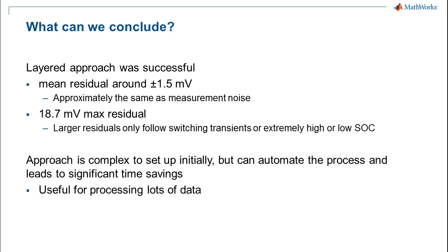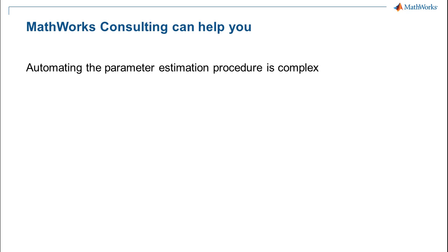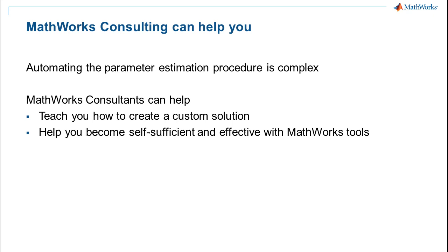While we found the approach to be rather complex to set up initially, we were successful in automating it, which led to significant time savings in processing a large number of datasets that characterize a battery cell. Automating the parameter estimation process is a complicated task. However, if you have lots of datasets to deal with, the benefits of automation are huge. MathWorks consultants can help. We've done this before, and we can help you customize a solution around your battery type and measured datasets. We focus on providing you detailed training so that you're self-sufficient and able to take on any future projects independently.